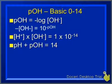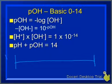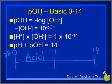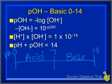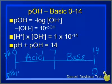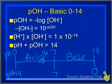Let me draw the pH scale: it goes from 0 to 14, with 7 in the middle. Acids are on the left (0 to 7), bases on the right (7 to 14). The smaller the pH number, the more acidic. pOH does the opposite: the smaller the pOH number, the more basic the solution. For example, a solution with pH 6 has a pOH of 8. A solution with pH 12 has a pOH of 2.